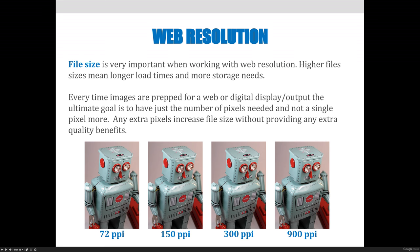If I look at the example images here at the bottom of the screen, the first image is at 72 PPI and it looks like a green robot with red accents. If I look at the resolution at 150 PPI, 300 PPI, or even 900 PPI, I've significantly increased the file size — but if I look at them, they all look exactly the same. Anything above 72 is not going to look any better on a display device because the display device can't show any better. So we want the smallest file size and the least number of pixels possible without deteriorating the image quality. That's why 72 PPI is standard web resolution.